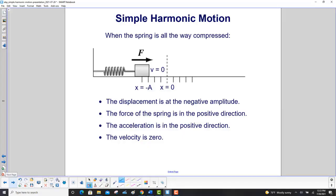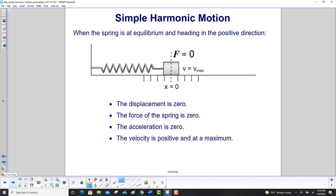Now we'll go through some scenarios here. First, the spring is all the way compressed. Here's the equilibrium point. It was pushed or compressed all the way to the x equals minus A position. So the displacement is at the negative amplitude. The force of the spring is in the positive direction, because x is negative. So F equals minus kx, that gives you a positive number. And that's shown here. The spring is pushing back. The acceleration is in the positive direction and the velocity is zero. It momentarily stops at that side.